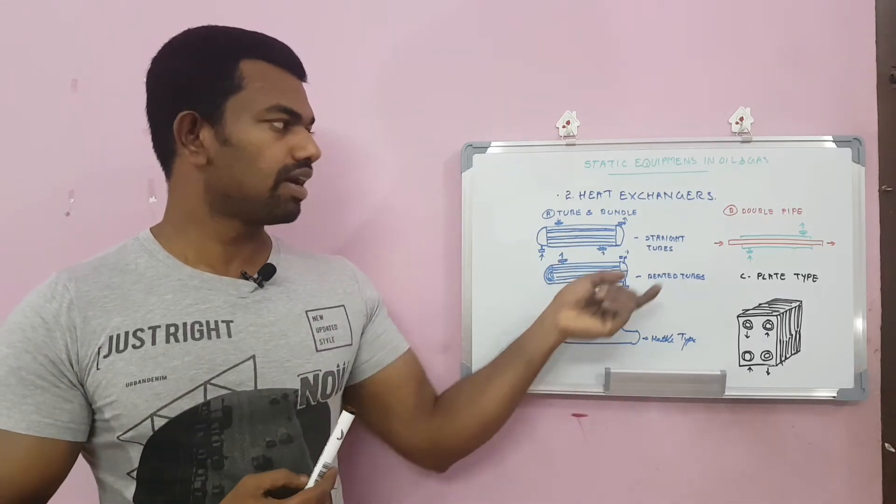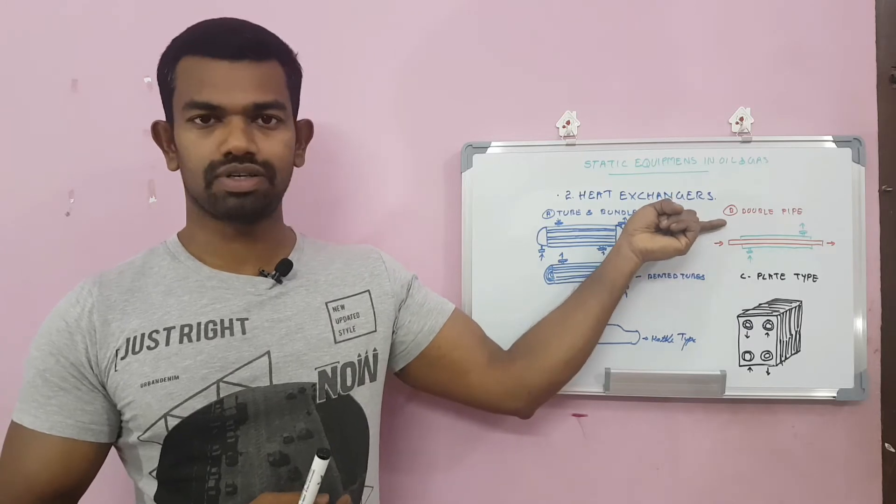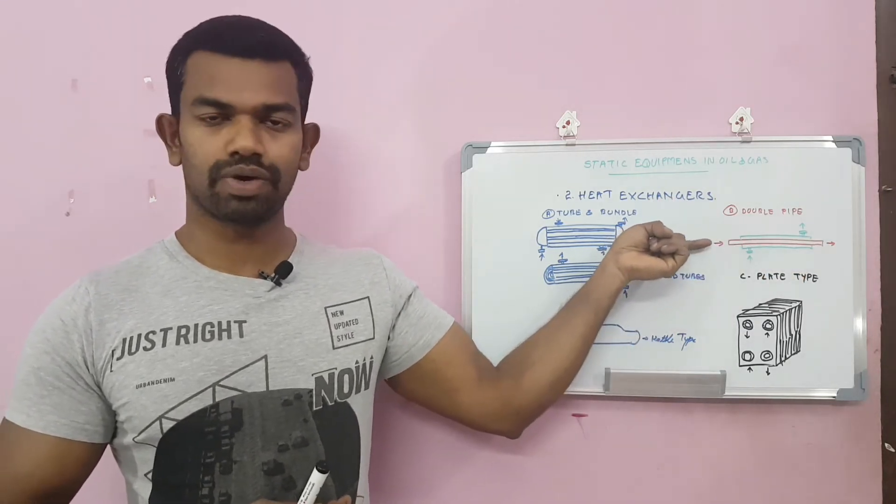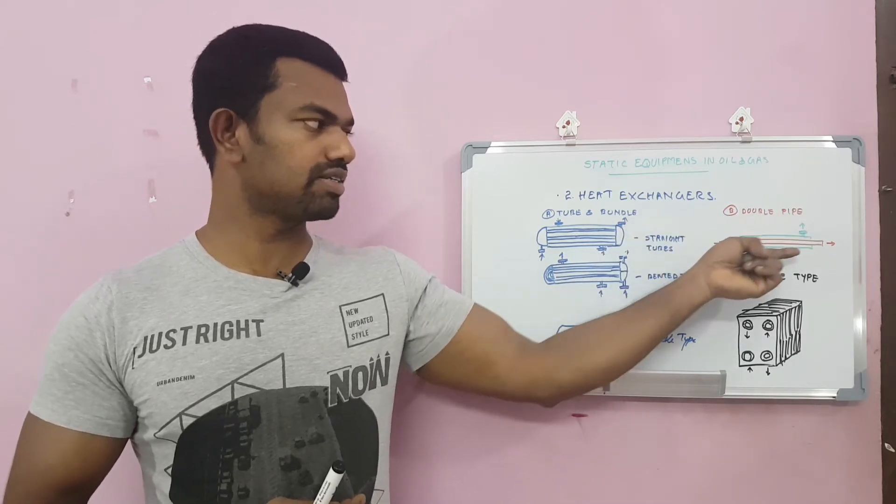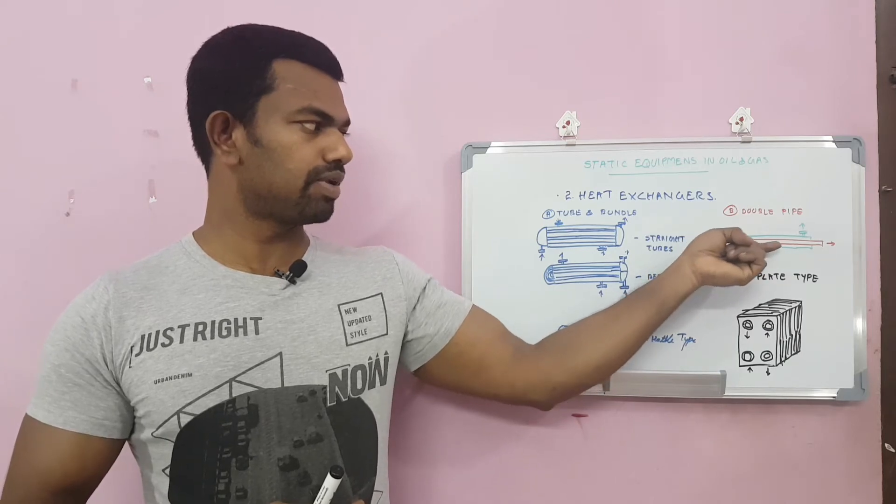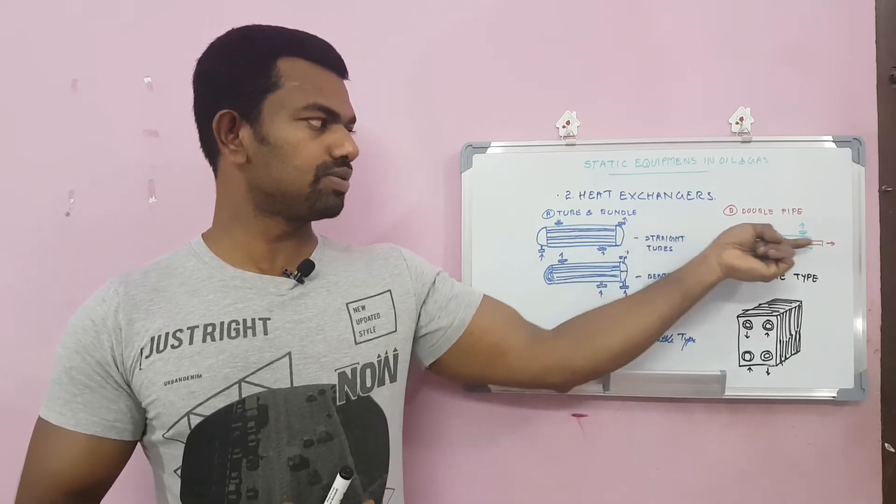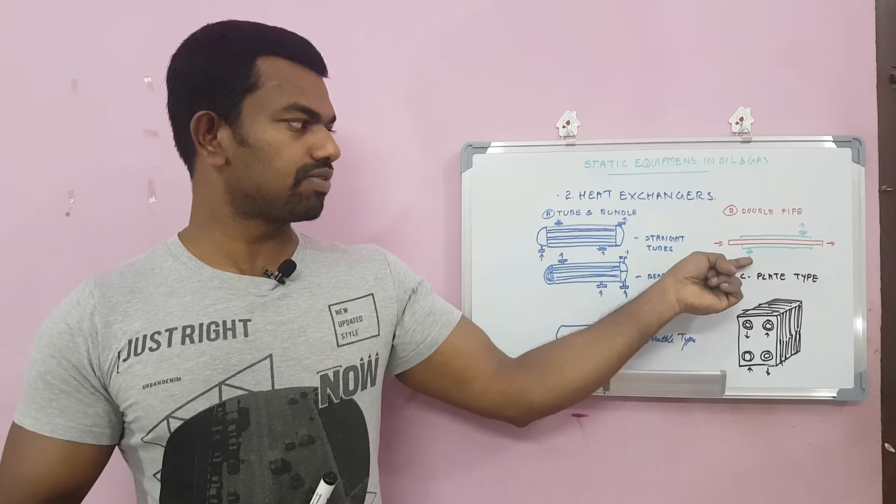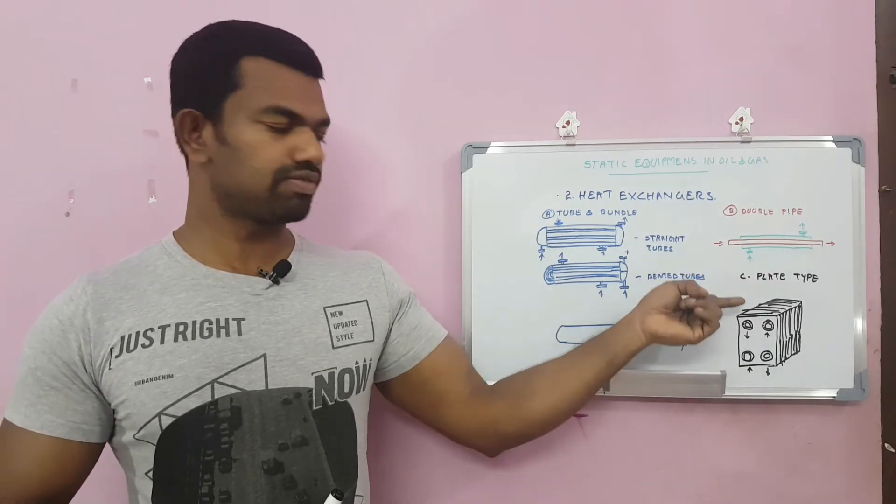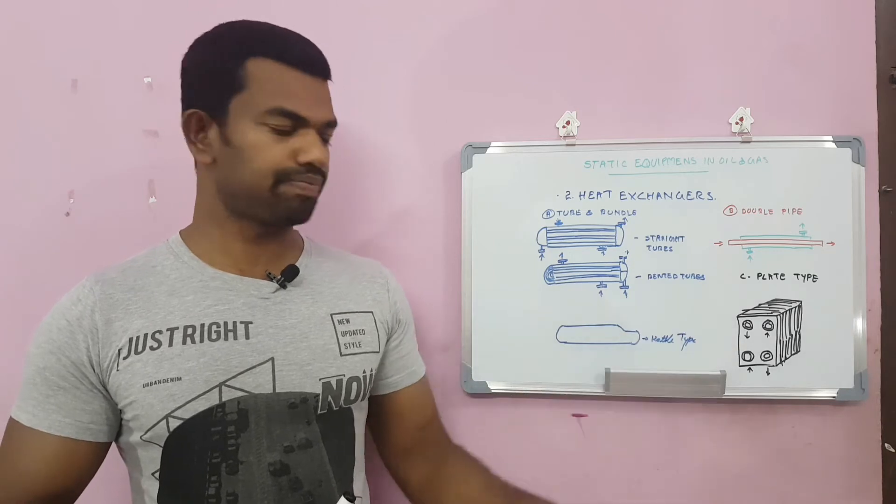There is a double pipe. This is a simple item. One pipe is going inside and outside there is some bigger size. The primary fluid is going through this red pipe. Secondary fluid is going through this green. And there is plate type exchangers.